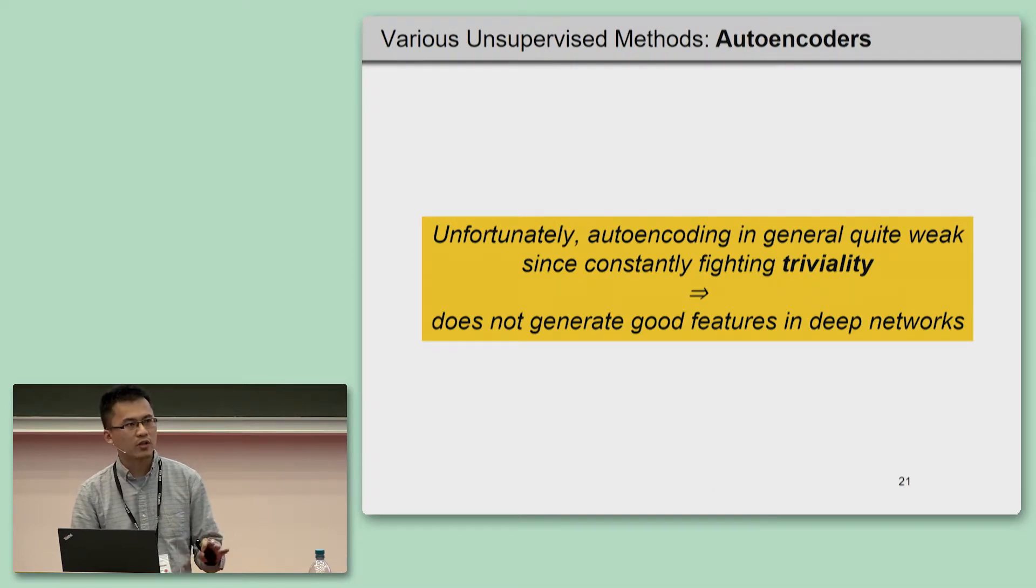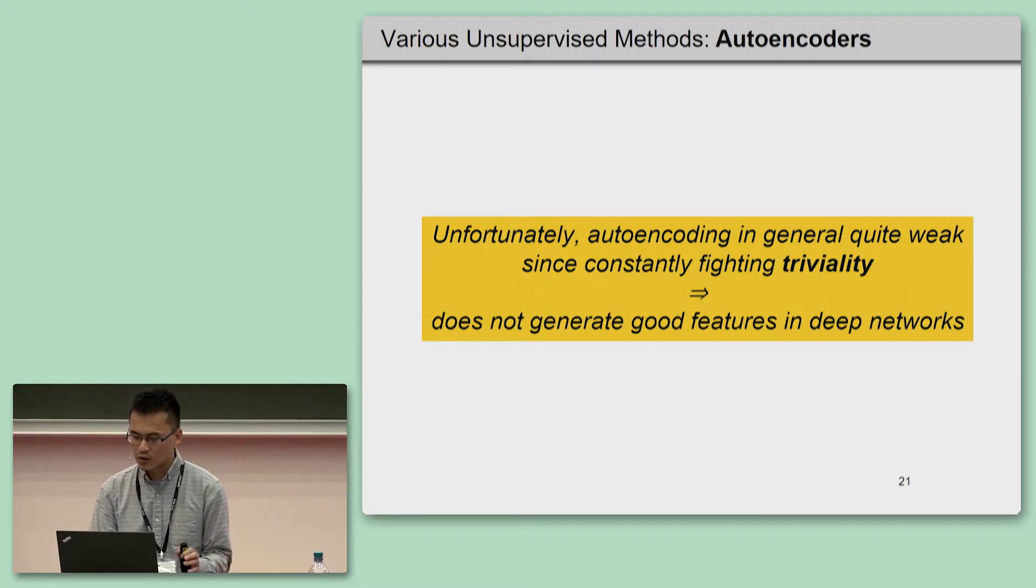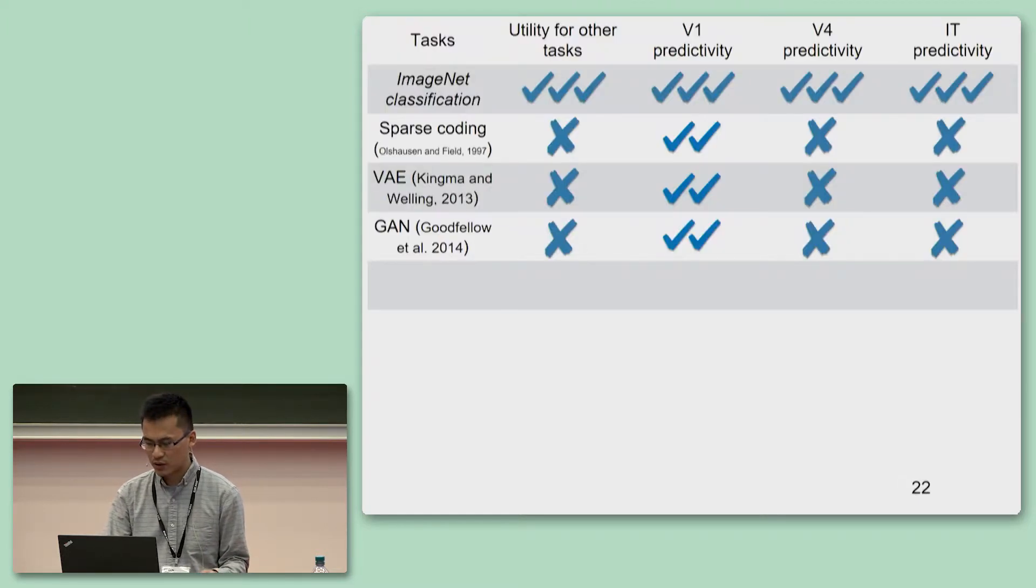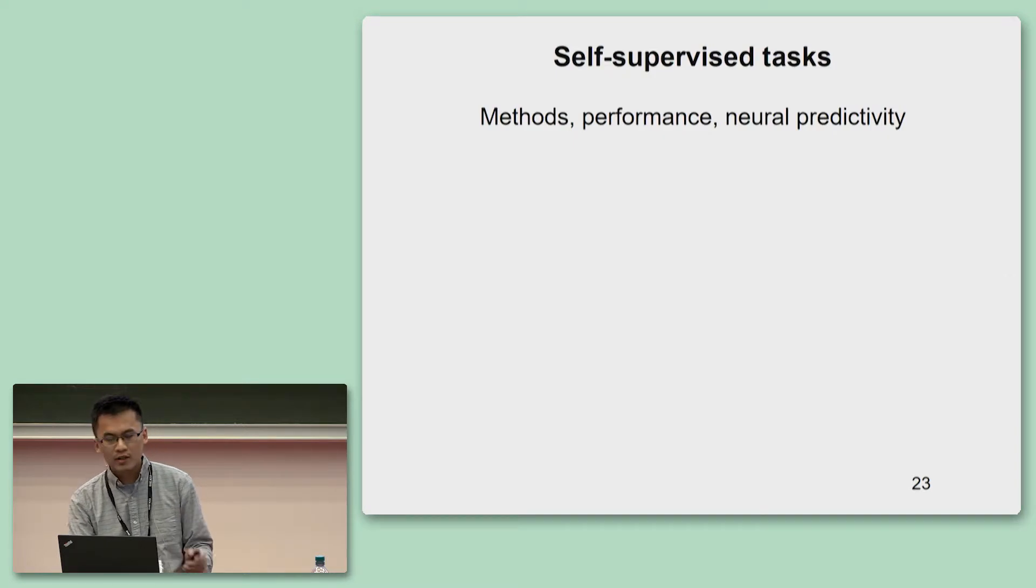All these tasks within the autoencoding framework are generally weak, so that the training requires a lot of extra constraints to fight against the trivial solutions. This makes the trained networks not strong enough to support other tasks. Therefore they might have good V1 predictivity, as they show filters similar to Gabors, but not V4 IT predictivity.